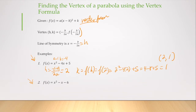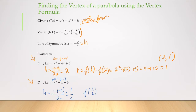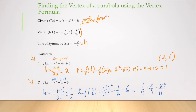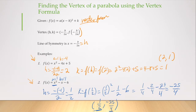For f of x equals x squared minus x minus 6: a is 1, b is negative 1. So h equals negative negative 1 over 2, which is 1 half. Then k equals f of 1 half: 1 half squared minus 1 half minus 6 equals 1 fourth minus 2 fourths minus 24 fourths, which gives negative 25 fourths. So the vertex is at x equals 1 half, y equals negative 25 fourths. This is the standard x squared function shifted right 1 half and down, if we were looking at the vertex form.